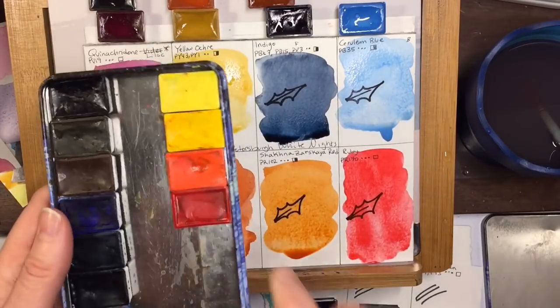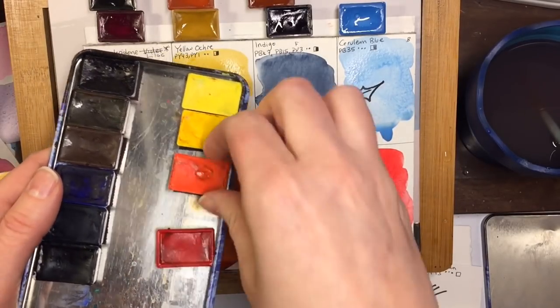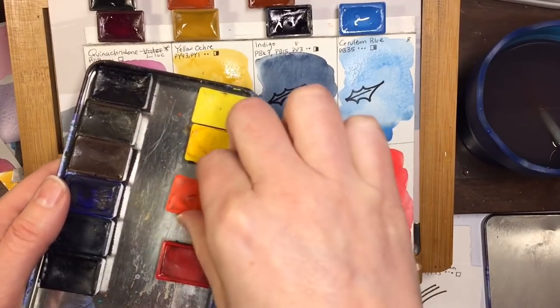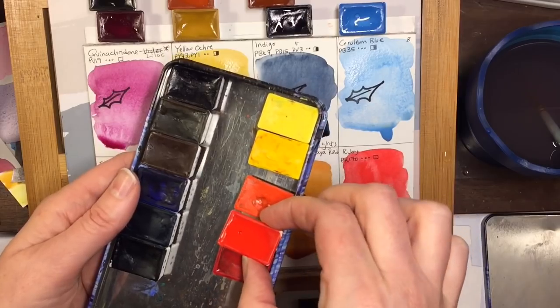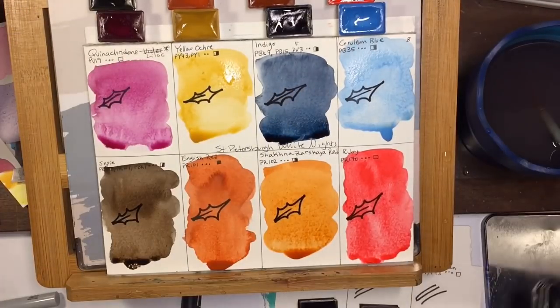These are the other reds I have. I have the less lightfast carmine and I believe this is a cad red light which is very orange. So this would go right in the middle of those two.